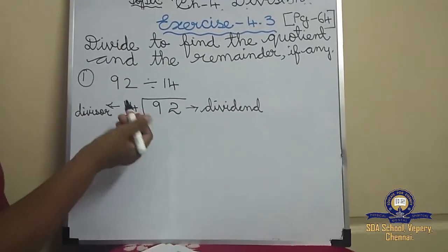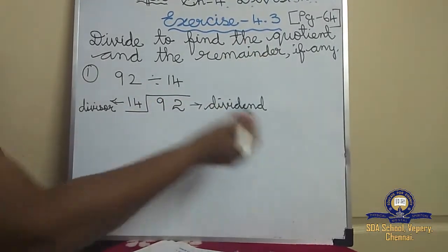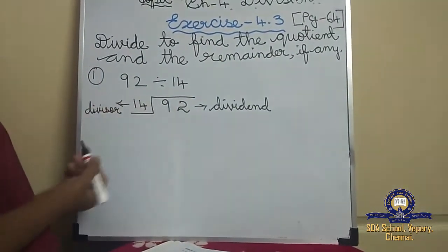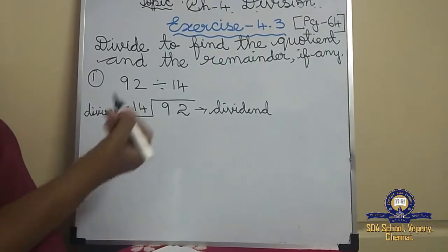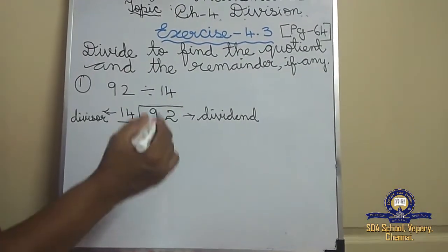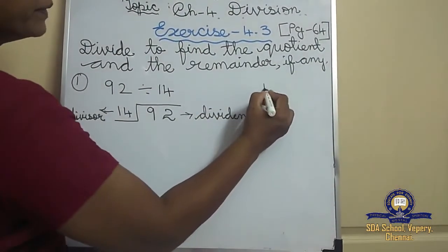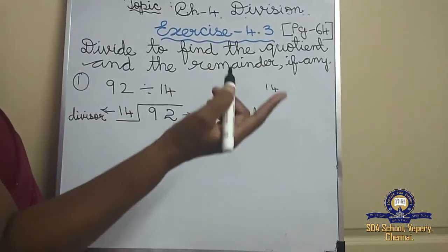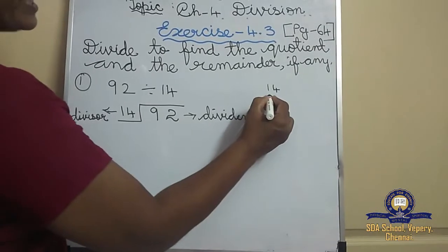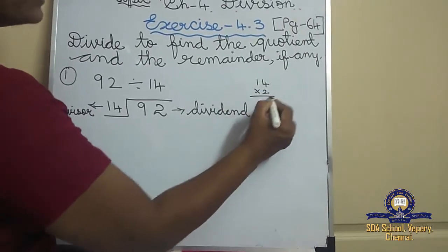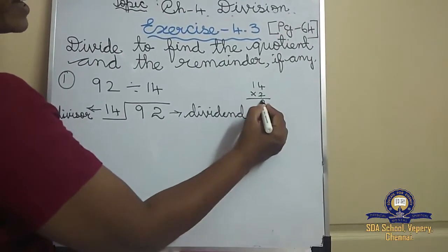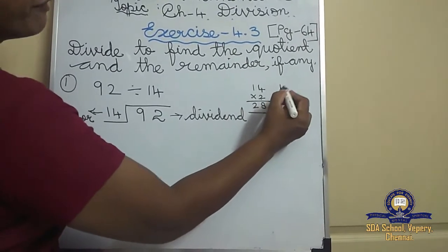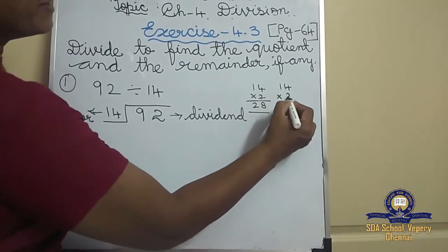When we had a single-digit divisor, we would write that digit's tables. Now it's two digits, so how can we divide? It's a bit hard, but the easy way is: start from 2. 14 twos — 2 fours are 8, 2 ones are 2, so 14 twos are 28. 14 threes — 3 fours are 12, 3 ones are 3, plus 1 is 4, so 42. Likewise, find the multiples this way.